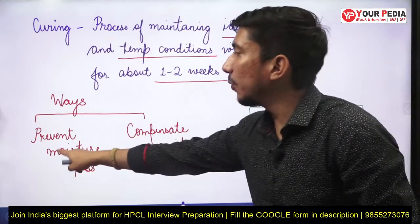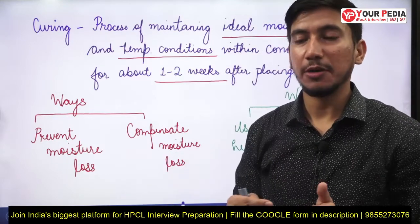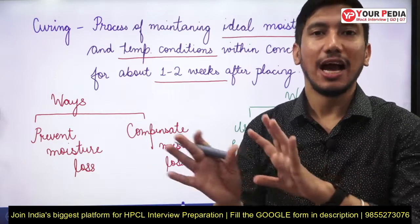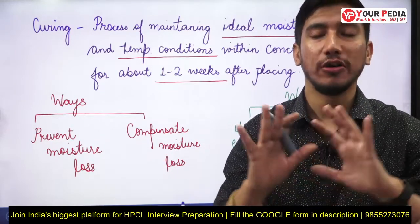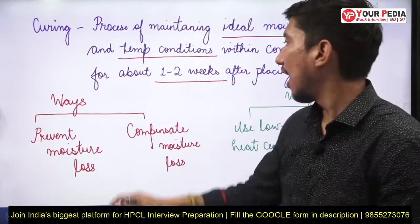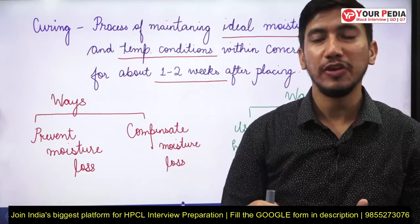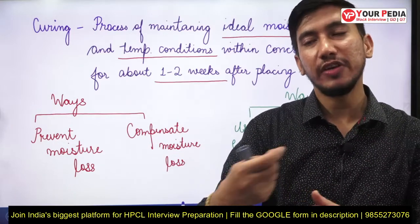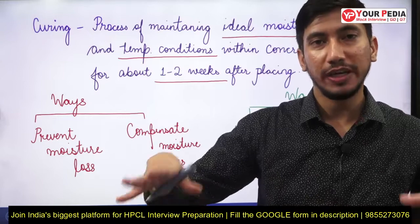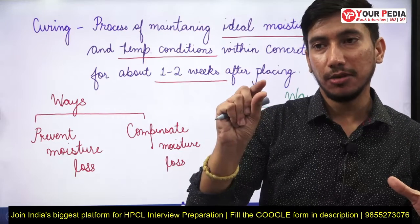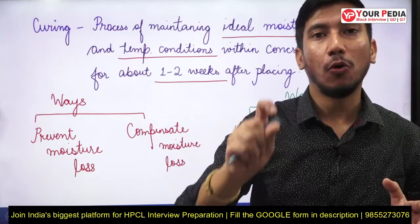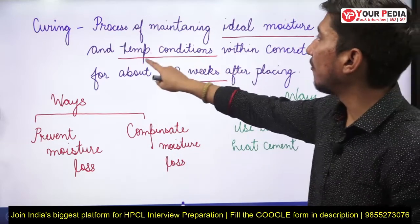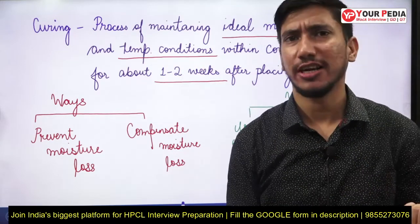To maintain ideal moisture conditions, we either prevent moisture loss — by covering the concrete with sheets or gunny sacks so evaporation doesn't occur — or we compensate for moisture loss by providing water externally. We can also do ponding, keeping a thin layer of water always available on the concrete surface.